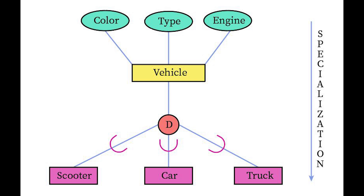The disjointness constraint specifies what subclasses an entity of the superclass can belong to. For example, where can a vehicle belong — scooter, car, or truck? If set to disjoint, the vehicle must be in either scooter, car, or truck exclusively. If set to overlap, the vehicle can be scooter, car, and truck all at once with overlaps. The completeness constraint indicates whether all entities of the superclass should belong to one of the subclasses: total means every entity in the superclass must be a member of some subclass, while partial allows an entity to belong only to the superclass and none of the subclasses.